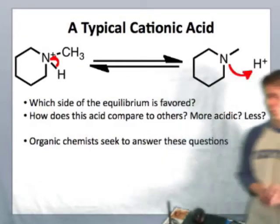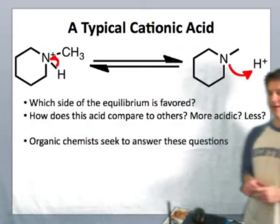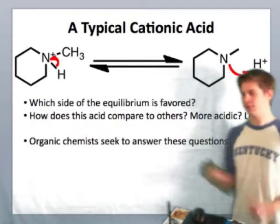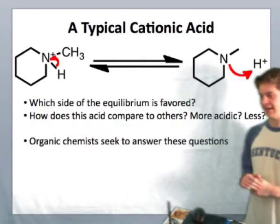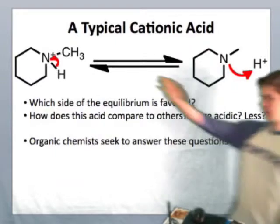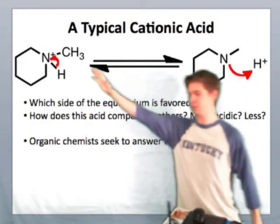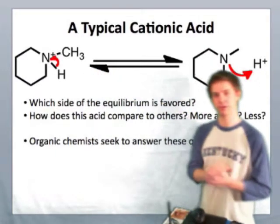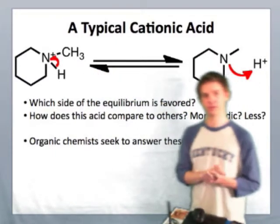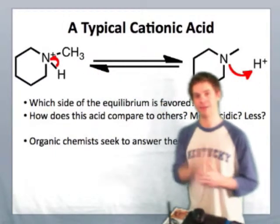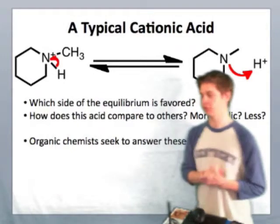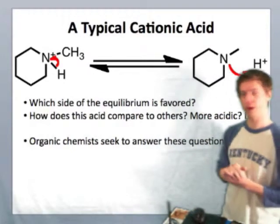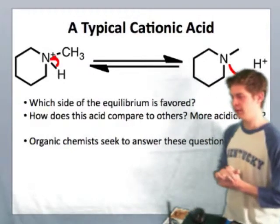What you see on this slide is a typical cationic acid. Up here on the right is a positively charged nitrogen that possesses four bonds. Nitrogen likes to have five electrons, so it's missing one — therefore, it's positively charged.